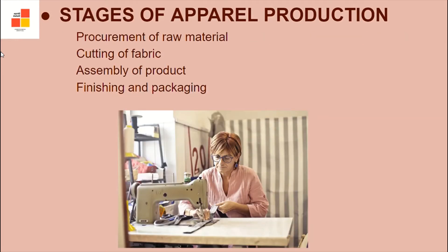There are various stages of apparel production. First, procurement and inspection of raw material, cutting of fabric, assembly of the product, finishing and packaging. Besides this, there is an additional stage called value addition, which means the process that adds to the cost of the product. This is done by giving special finishes to the fabric — for example, a sand wash given to denim.